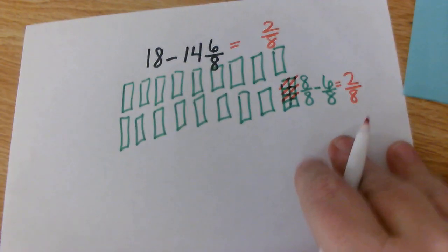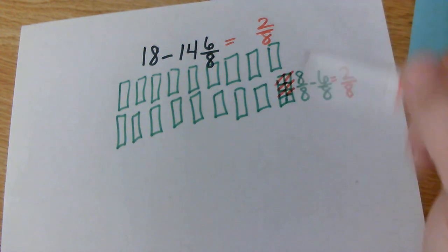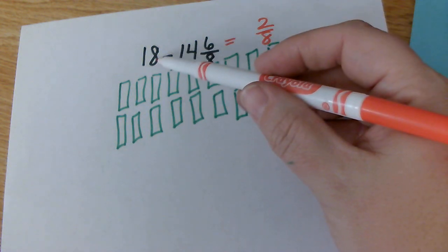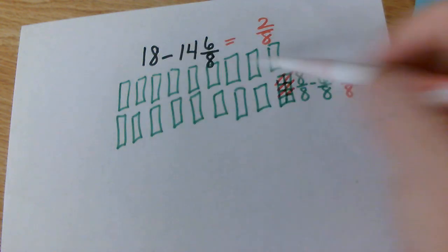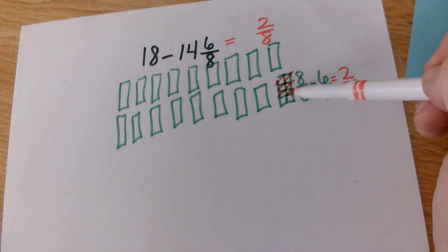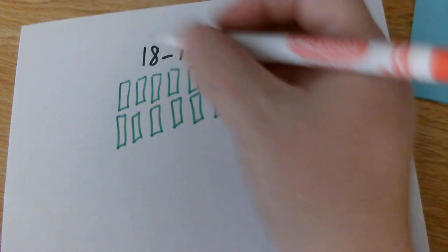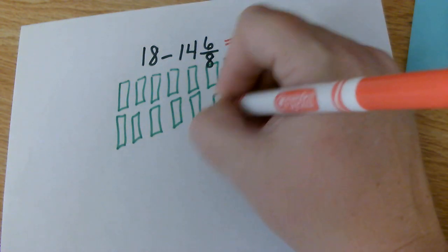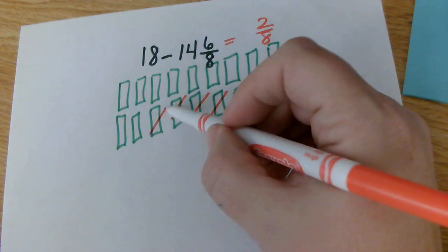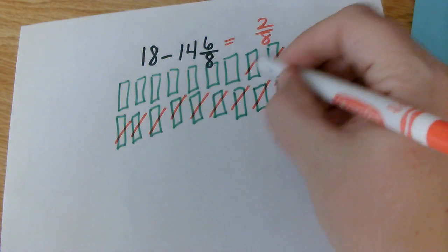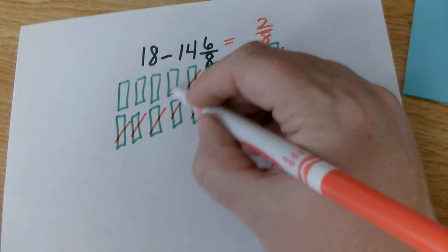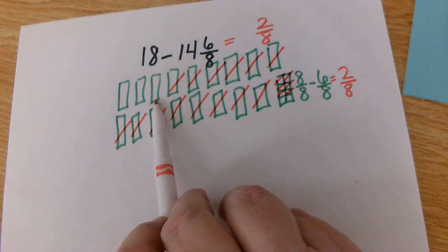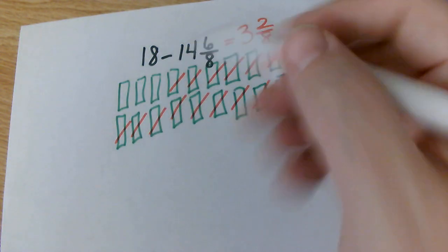I still don't know what my whole number is because I haven't subtracted it yet. Now I can subtract my whole number since I've already subtracted my fraction. I'm going to say 18 minus 14, but I don't really have 18 anymore because I took 1 and broke it up into eighths. So I'll cross off 14: 1, 2, 3, 4, 5, 6, 7, 8, 9, 10, 11, 12, 13, 14. How many do I have left? 1, 2, 3. So my answer is 3 and 2 eighths.